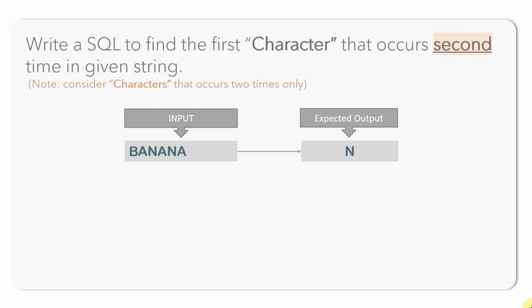Let me explain what the question is about. We are provided with a string and we need to find the character that occurs the second time — that is, the first character that occurs a second time. Let us understand with an example.